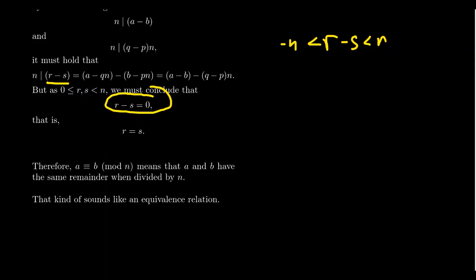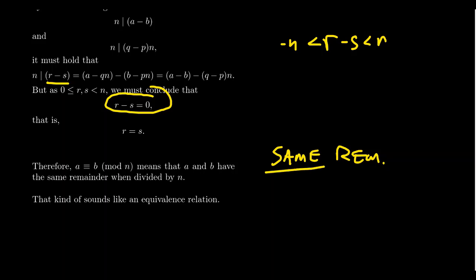So if A is congruent to B mod N, A and B have the same remainder when divided by N. This is actually an if-and-only-if statement — if they have the same remainder, they'll be congruent modulo N, and you can verify the reverse direction as an exercise. This equivalence of remainders is exactly why this relation turns out to be an equivalence relation, measuring when two things share a common remainder.